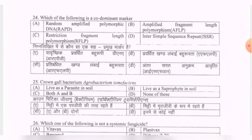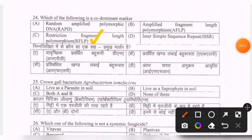Next question: which of the following is a co-dominant marker? Options are RAPD (random amplified polymorphic DNA), AFLP (amplified fragment length polymorphism), RFLP (restriction fragment length polymorphism), ISSR (inter simple sequence repeat). The correct option is C — RFLP.